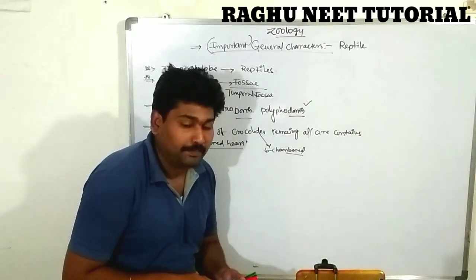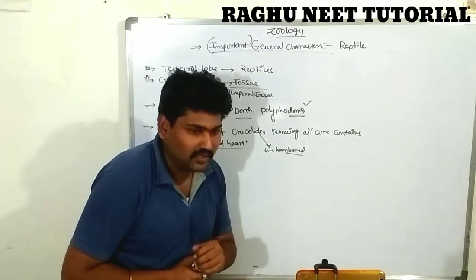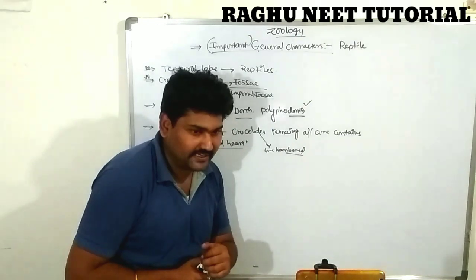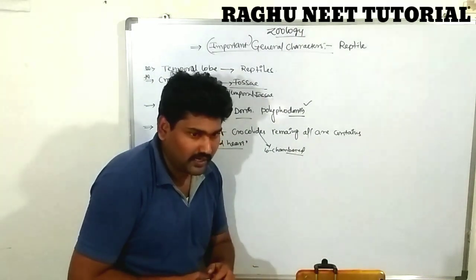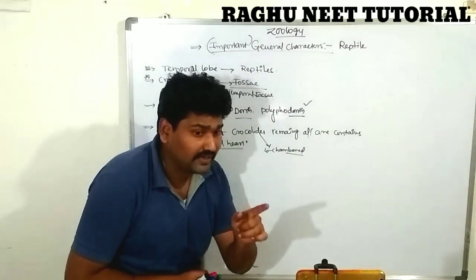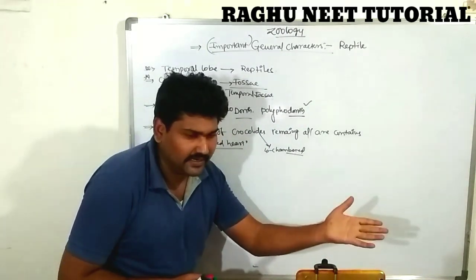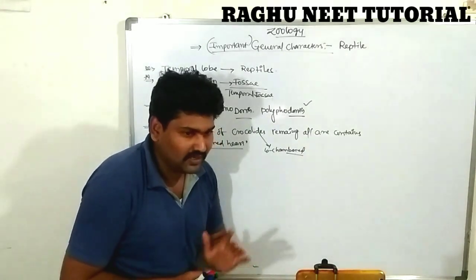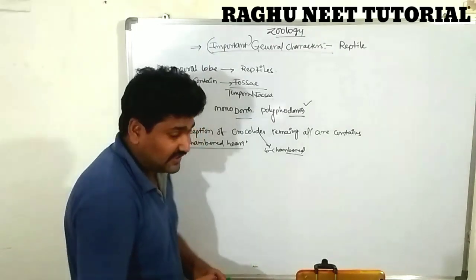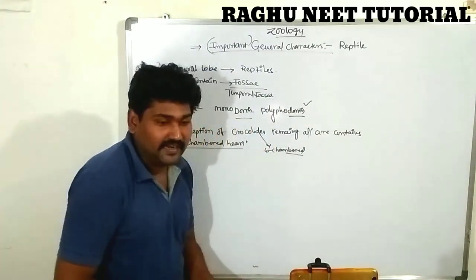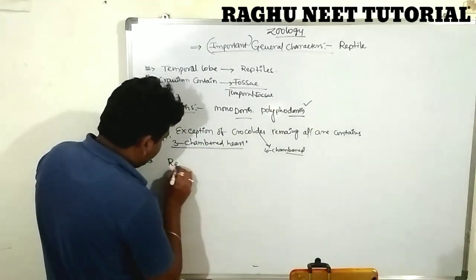In reproduction, amphibians release eggs into the aquatic region and males release sperm externally — fertilization takes place outside the body with no copulatory organ involved. But in reptiles, there is development of a muscular penetrative organ, enabling internal fertilization.